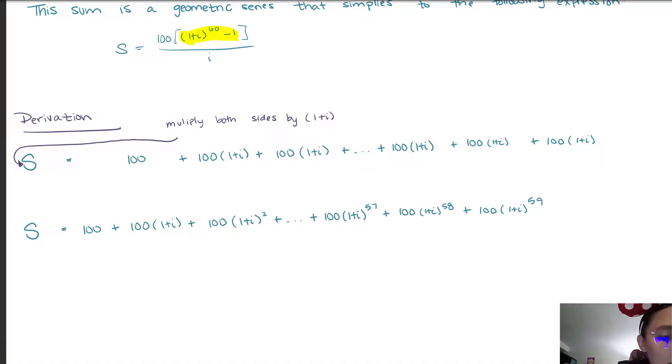So 1 plus I, I'm going to multiply this 100 times 1 plus I. Then as we learn in successive rates, when we multiply, when we have repeated multiplication, we can change the powers. So for example this 100 times 1 plus I times 1 plus I is the same as 100 times 1 plus I squared. Similarly this would be cubed, and then we go on. This one is to the 60th, 59th, 58th.